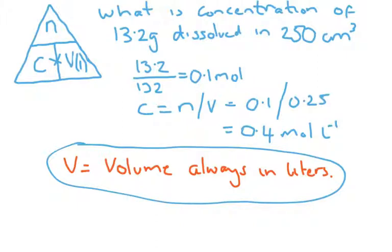If the concentration of 13.2 grams is over 250 centimeters cubed, first work out the number of moles we have. That would be 13.2 divided by 132, giving us 0.1. Concentration equals number of moles divided by the volume. That would be 0.1 divided by 0.25, changed from 250 centimeters to liters. This gives us a concentration of 0.4 moles per liter.